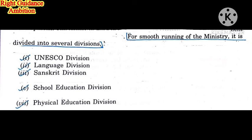The three-language formula consists of the regional language, plus Hindi, plus English. The third division is the Sanskrit Division. Next is the School Education Division, followed by the Physical Education Division. In this way, the education department has different divisions so that each division can properly focus on the relevant laws and policies.